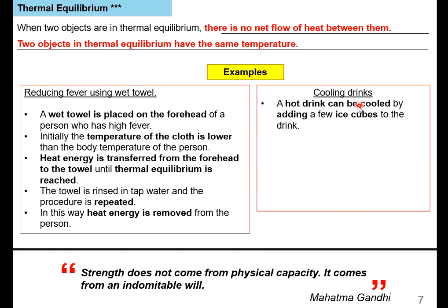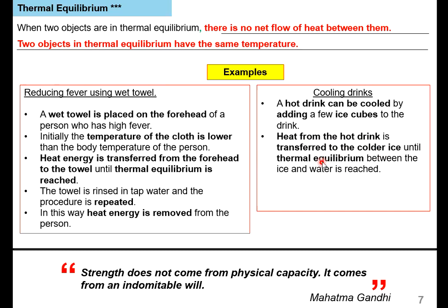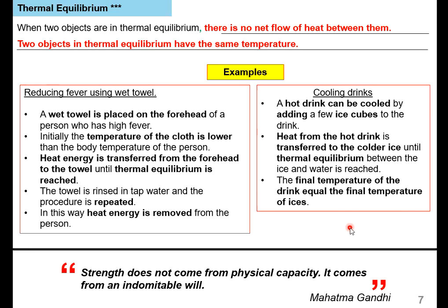Second example — cooling drinks: a hot drink can be cooled by adding a few ice cubes. The heat from the hot drink is transferred to the colder ice until thermal equilibrium between the ice and the water is reached. The final temperature of the drink equals the final temperature of the ice. In the exam, you need to use these key words: state that heat from the hot drink is transferred to the colder drink until thermal equilibrium, and that the final temperature of the drink equals the final temperature of the ice.